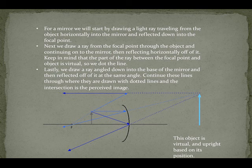For a mirror, we will start by drawing a light ray traveling from the object horizontally into the mirror and reflected down into the focal point. Next, we draw a ray from the focal point through the object and continuing onto the mirror, then reflecting horizontally off of it. Keep in mind that the part of the ray between the focal point and the object is virtual, so we dot the line.